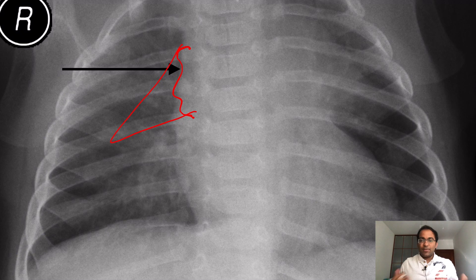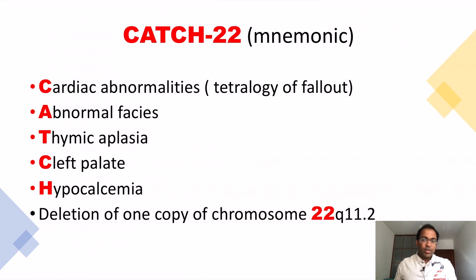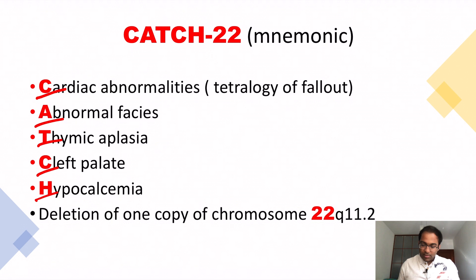The last slide presents the mnemonic CATCH-22, to help remember DiGeorge syndrome: C for Cardiac abnormalities, A for Abnormal faces, T for Thymic aplasia, C for Cleft palate, H for Hypocalcemia, and 22 for chromosome number 22.